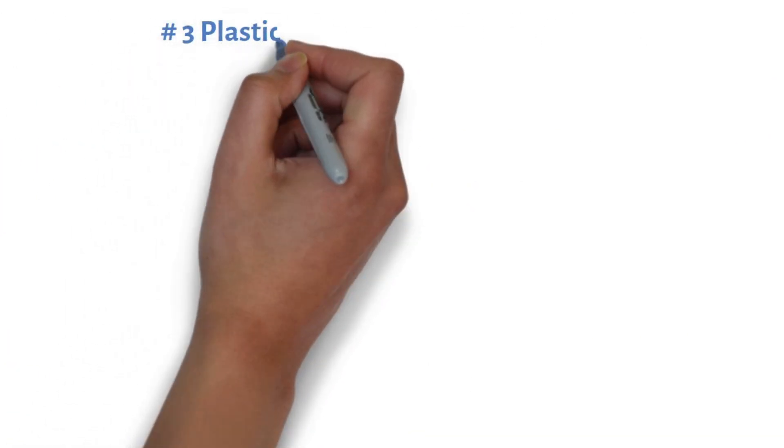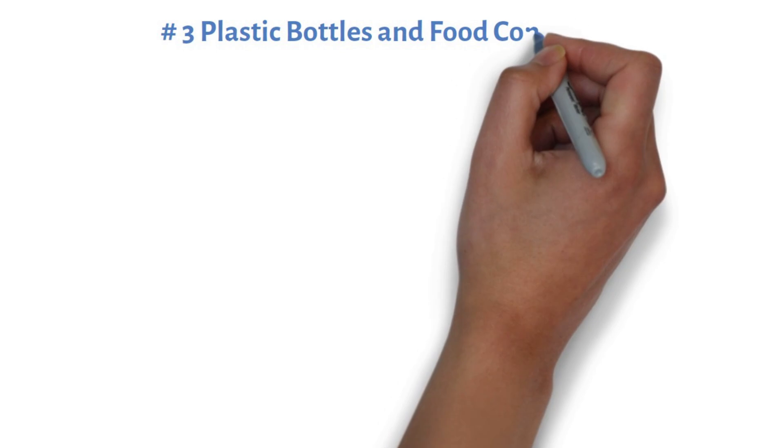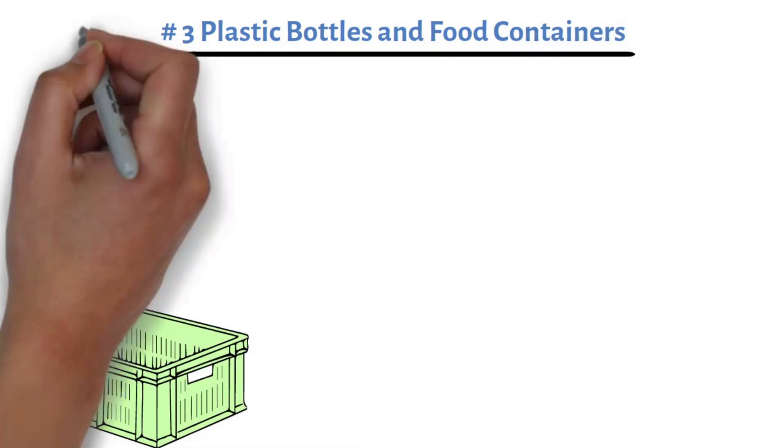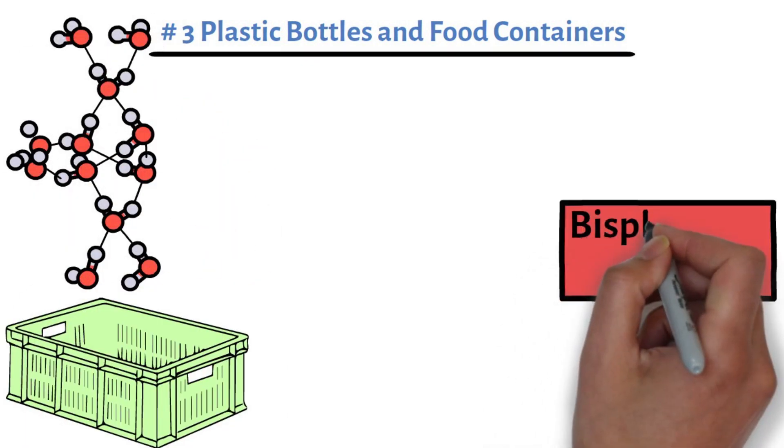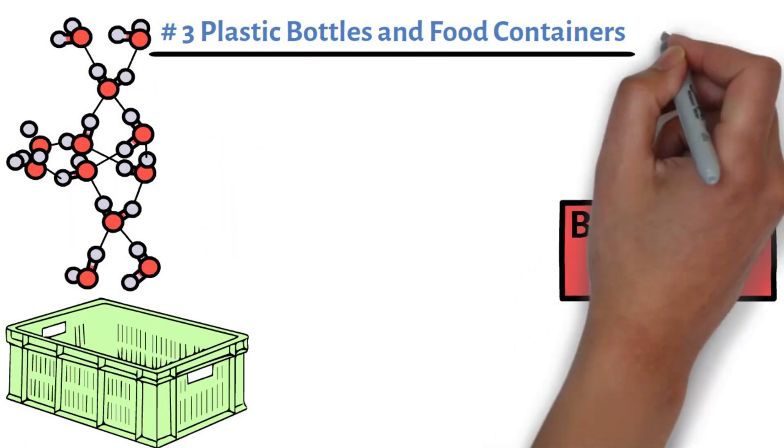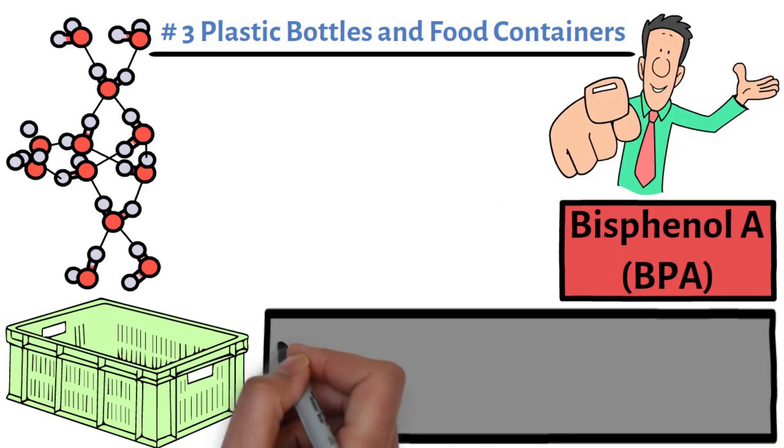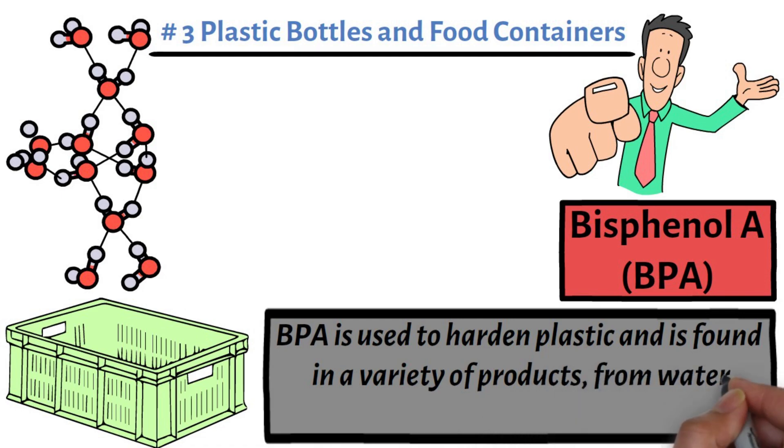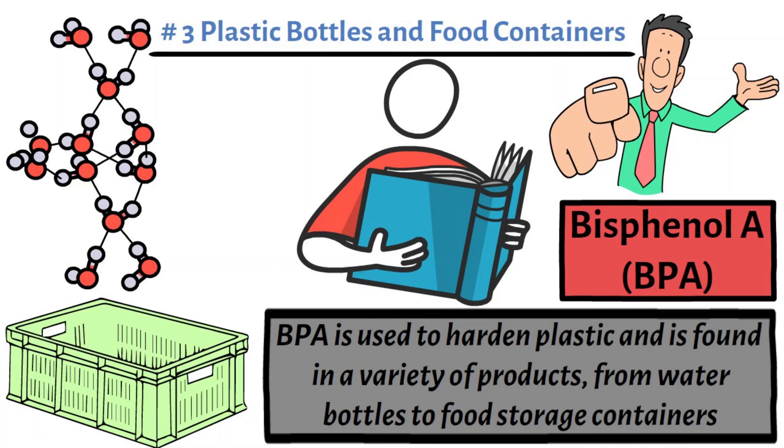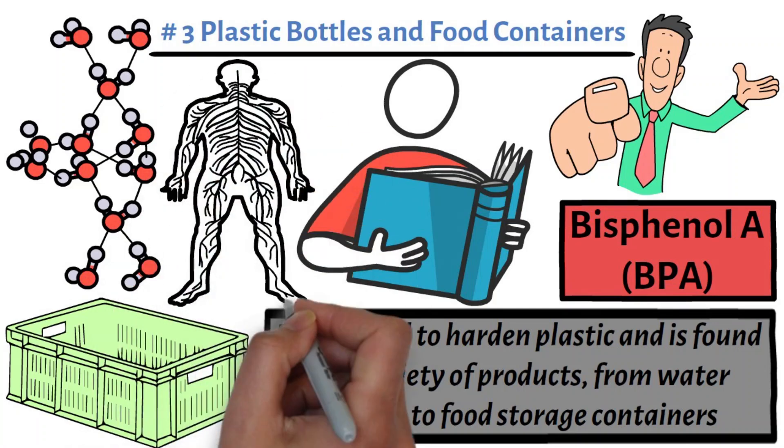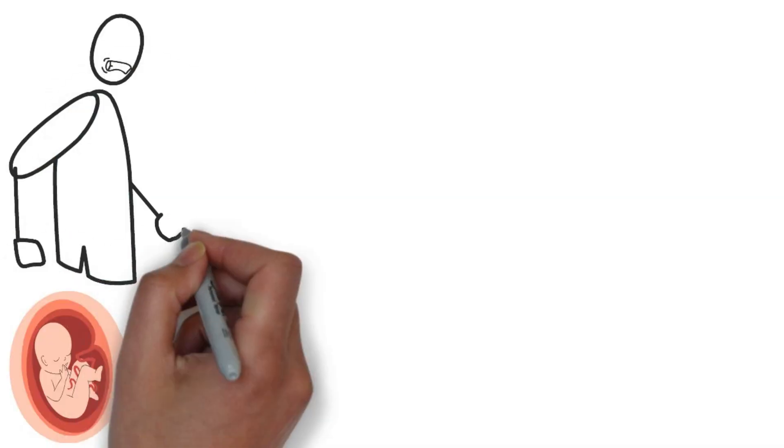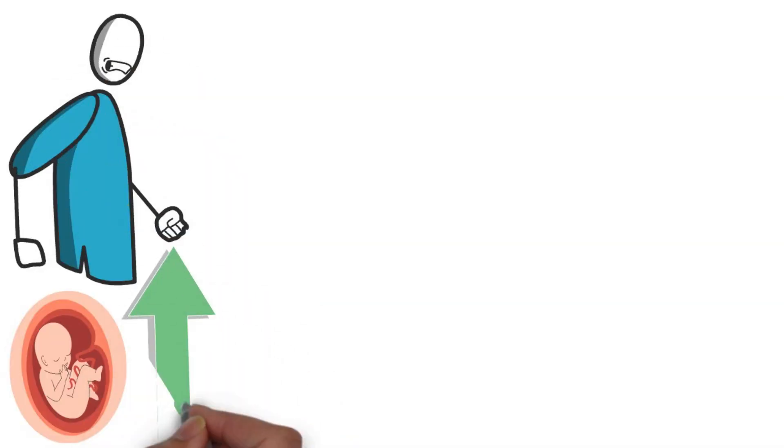Product number three, plastic bottles and food containers. Plastic containers might be convenient, but they can leach harmful chemicals like bisphenol A or BPA into your food and drinks. BPA is used to harden plastic and is found in a variety of products, from water bottles to food storage containers. Studies have shown that BPA can mimic estrogen and other hormones, potentially leading to reproductive issues, behavioral problems, and increased cancer risk.